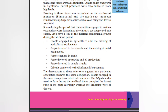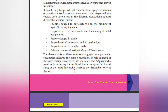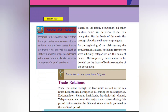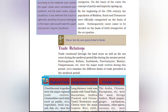The Adiyalas who farmed during the medieval times occupied the lowest rung in the caste hierarchy, whereas the Brahmins were at the top. According to the medieval caste system, the upper castes were considered pure and the lower castes impure. It was believed that touch, sight, or even proximity of a lower caste person would make the upper caste impure. By the beginning of the 19th century, the population of Malabar, Kochi, and Travancore were officially categorized on the basis of caste. Subsequently, caste came to be decided on the basis of birth, irrespective of occupation.